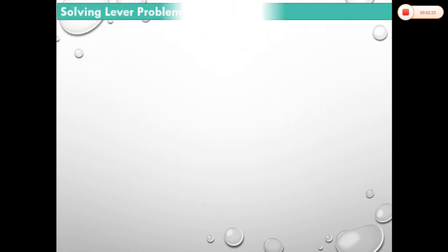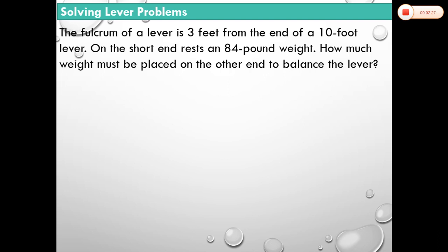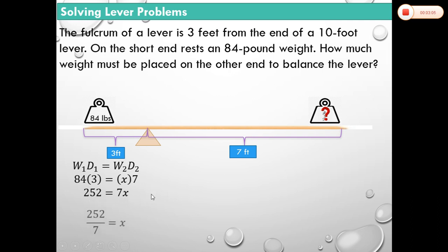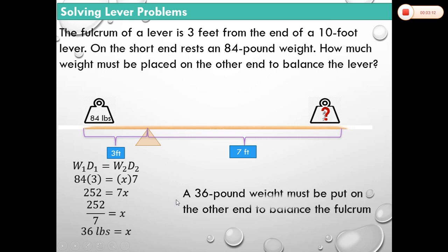Second example: The fulcrum of a lever is 3 feet from one end of a 10-foot lever. On the short end rests an 84-pound weight. How much weight must be placed on the other end to balance the lever? By the lever principle, 84 × 3 = x × 7, where x is the weight on the other end. So 252 = 7x, and dividing both sides by 7 gives x = 36 pounds. Therefore, a 36-pound weight must be placed on the other end.